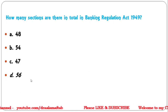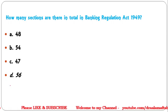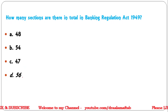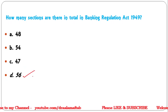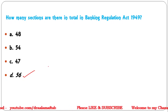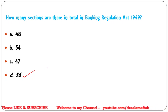Next question: How many sections are there in total in the Banking Regulation Act 1949? Options: 48, 54, 47, or 56. The correct answer is 56. Initially there were 55 sections, but the 56th section was added to accommodate cooperative banks, making it 56 in total.